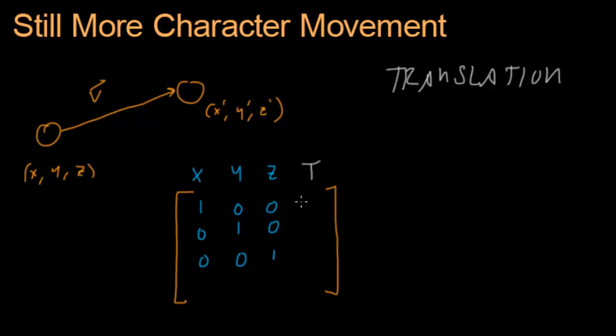So let's see what's in our new translation column. Vx, vy, and vz. So we take the x, y, and z components of this vector right here, and we put it in our translation matrix as a new column.